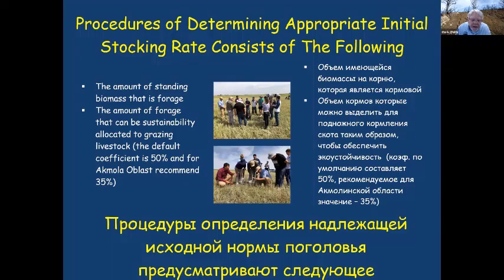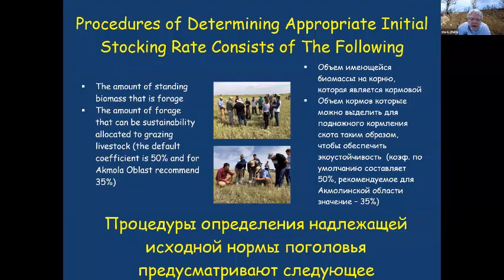This conservative assessment allows us to establish a stocking rate, and over time we can change that coefficient from 35% to 40% to 45% to 50% based on how we see vegetation responding to grazing. This allows us to increase stocking rates over time if justified without harming the ecosystem. It's much easier to increase stocking rates than to decrease them and face economic impact from fewer cattle to sell.